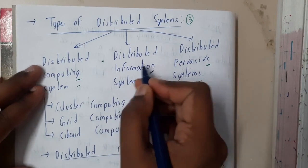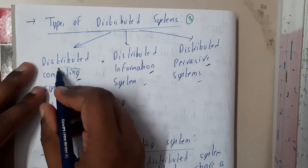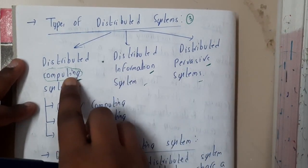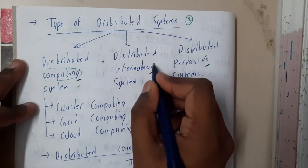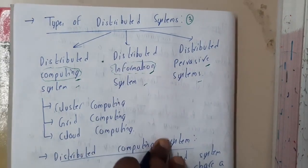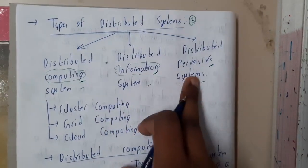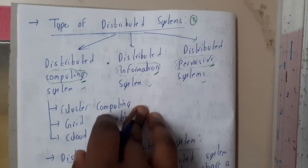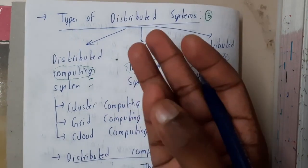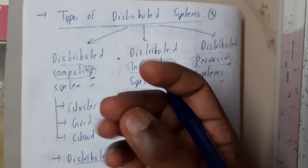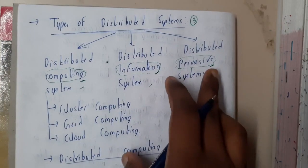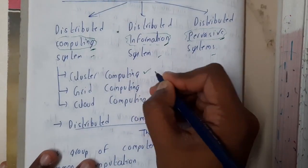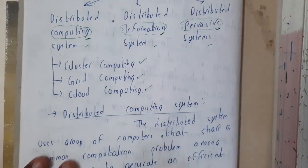From the words you can get some idea. Computing means we are solving a problem. Distributed information system means systems might be sharing information among themselves. Distributed pervasive system is a distributed system through which you can get real-time values, like an IoT device giving temperature and pressure readings from time to time. Distributed computing systems are further divided into three types: cluster computing, grid computing, and cloud computing.